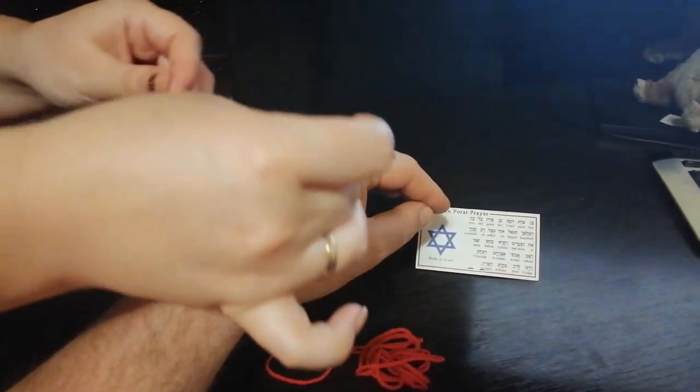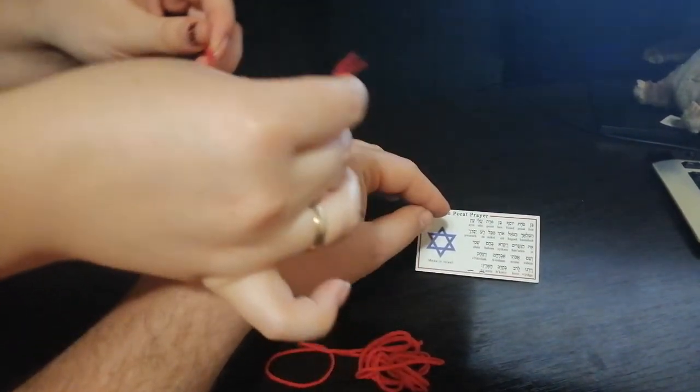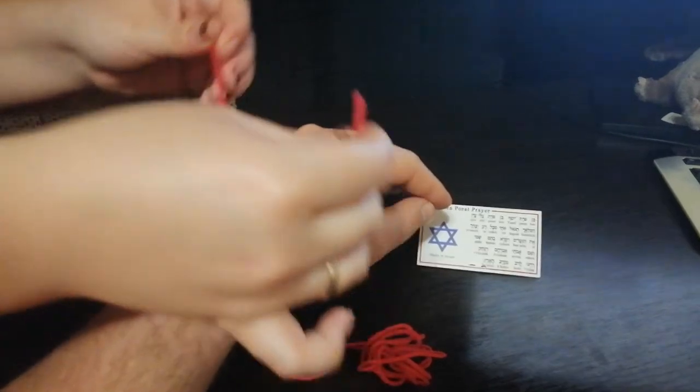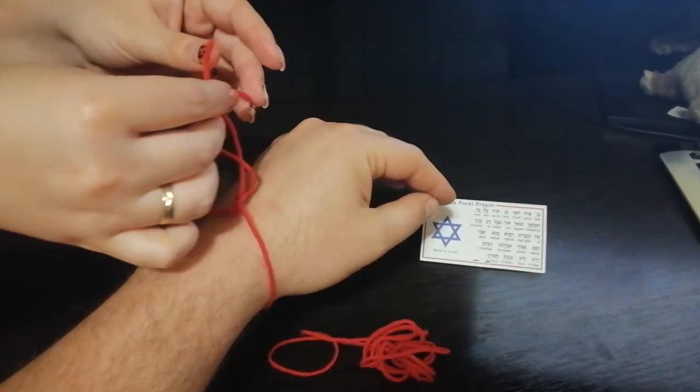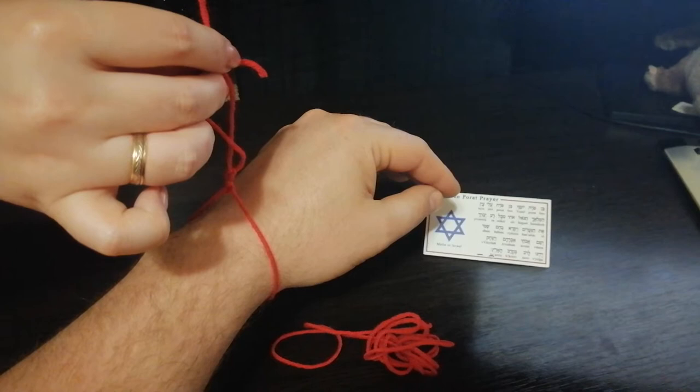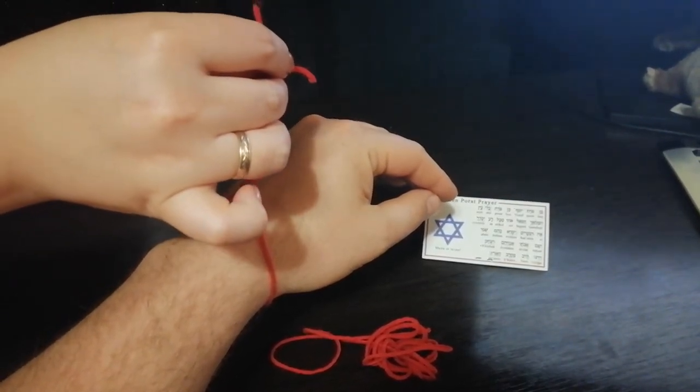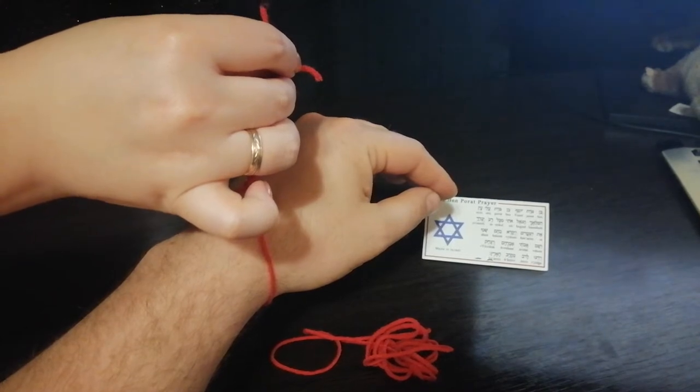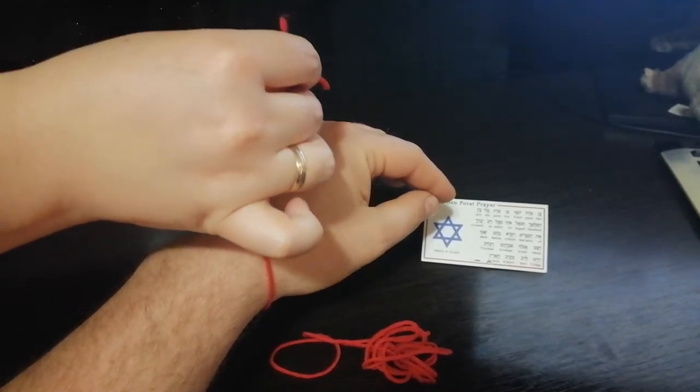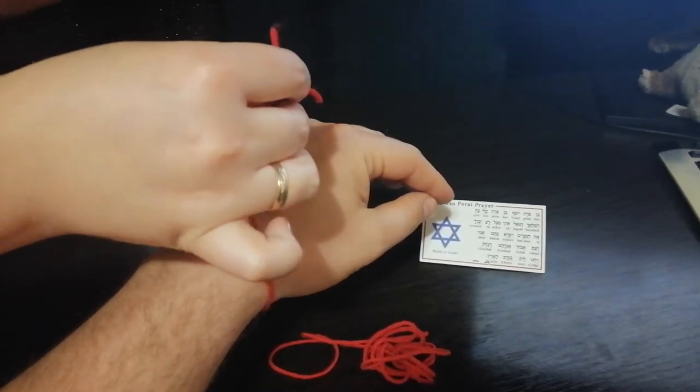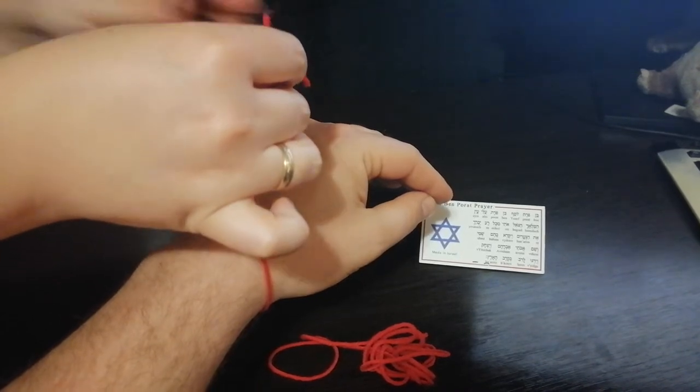Ben Porat Yosef, Ben Porat Porat Aleian, Banit Zadar Aleisha, Hamalak Hagoyaloti Mikkel Raya Varari Kahanaram Vaya Kare Baram, Shmi Veshem Avatai Avraham Vizchak Vyadrula Rav Bekare Haaretz.